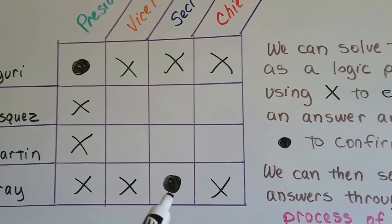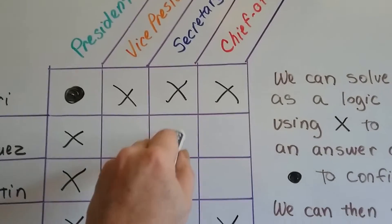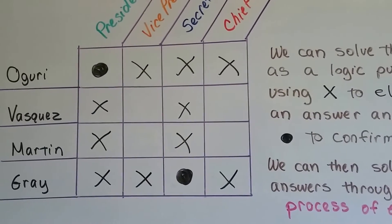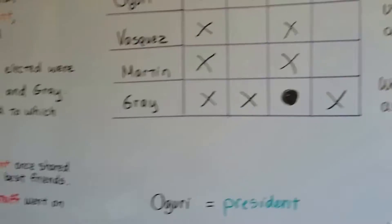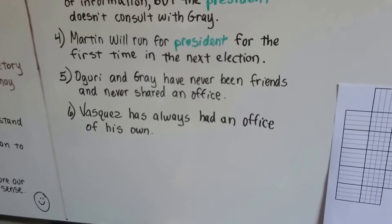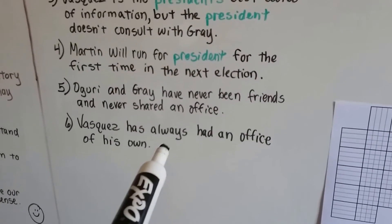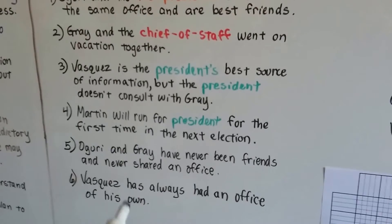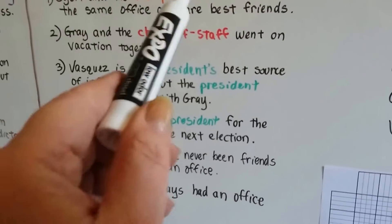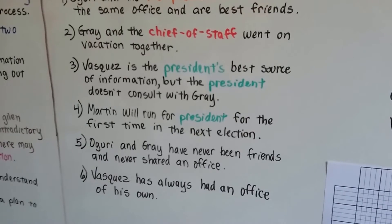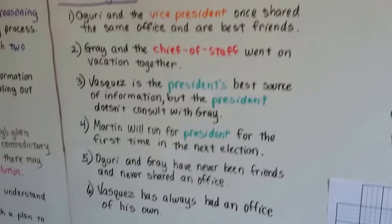If the Secretary General is Gray, then it's not Vasquez and it's not Martin — we eliminate those. The last clue says Vasquez has always had an office of his own. Oguri shared an office with the Vice President, so Vasquez can't be the Vice President — he's never shared. We put an X for Vasquez under Vice President.